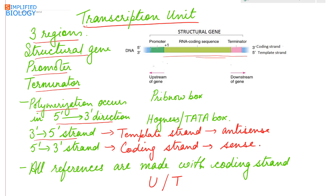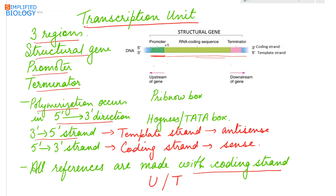All references to the transcription unit are made with the coding strand. The promoter is the region where transcription starts; it lies upstream of the gene, that is towards the 5 prime end of the structural gene. The terminator is the region where transcription ends; it lies downstream of the gene, towards the 3 prime end of the structural gene.